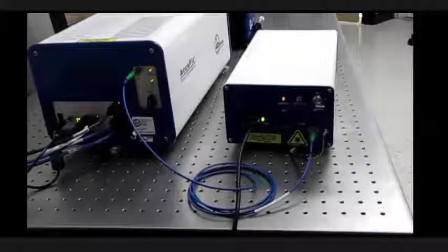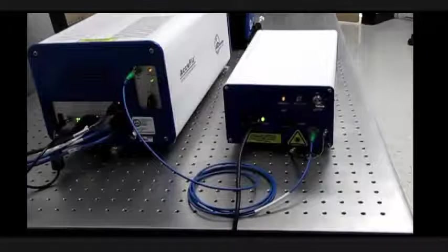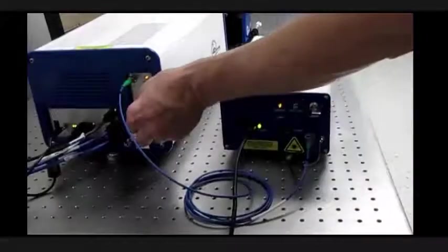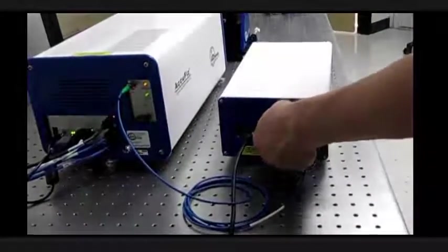The measurement procedure with the surface isolation source is essentially the same as for a standard interferometer. First, close the beam block for the internal source, then open the beam block for the surface isolation source.